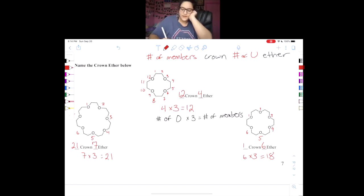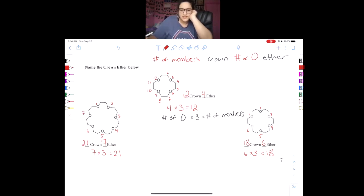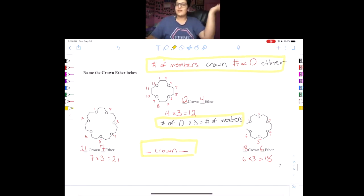So we have eighteen crown six ether. The last thing I want to note is that sometimes Dr. West will just say blank crown blank, so if he leaves out the ether at the end, that's completely okay. This is just another way to name ethers, and that's it. This is a really simple straightforward concept.